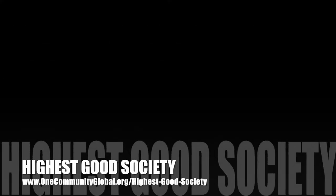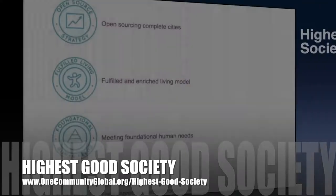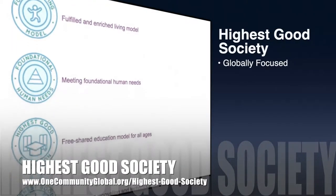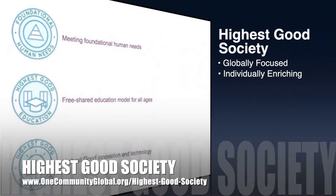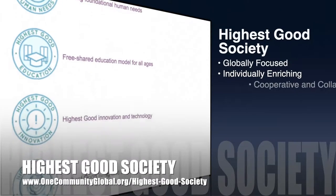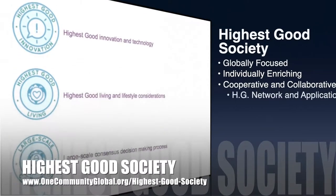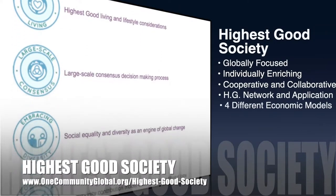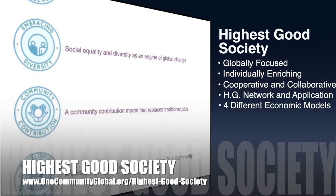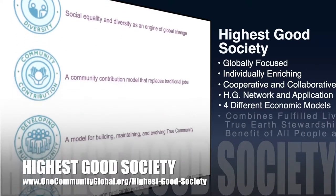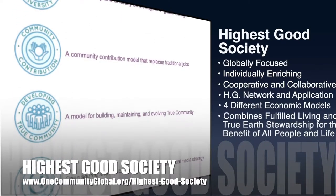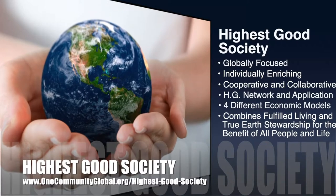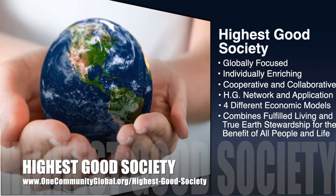The One Community approach to highest good society is globally focused, individually enriching, cooperative and collaborative, includes a highest good network and application, four different economic models, and combines fulfilled living and true earth stewardship for the benefit of all people and all life on this planet.